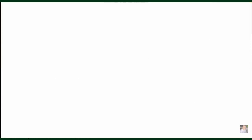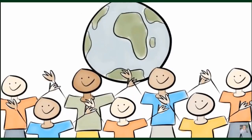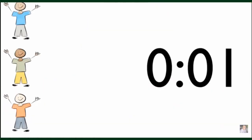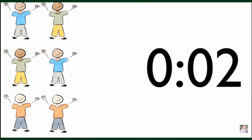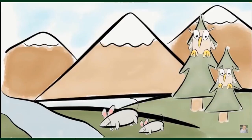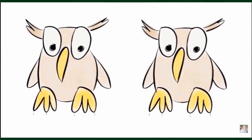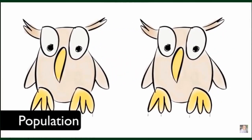The population of people on earth is increasing every day. Scientists have measured the growth to be three new people every second. But people are not the only population that you can count. Another example of a population is all of the owls in a forest. A population is a group of the same organisms living in an area.